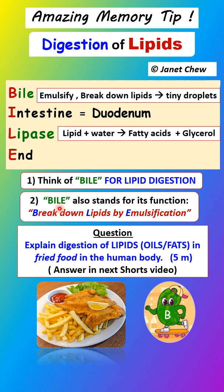Finally, here is a question: explain the digestion of lipids in fried foods — for example, fried chicken, fried potato chips, or fried bananas — in the human body. All these fried foods contain a lot of lipids. Explain how lipids in fried food are digested in the human body. The answer will be given in the next shorts video.